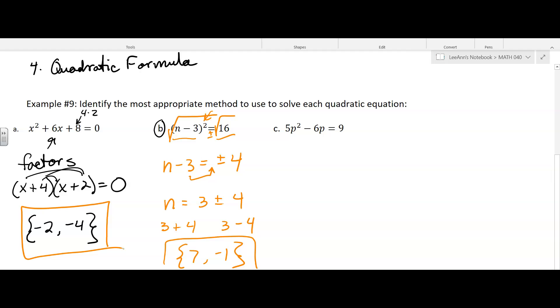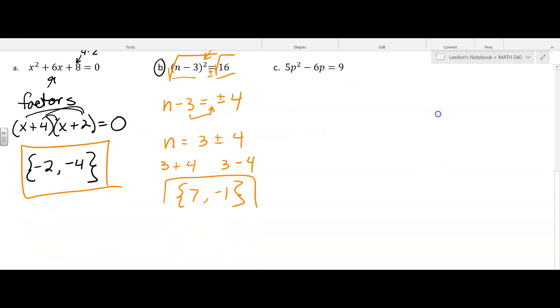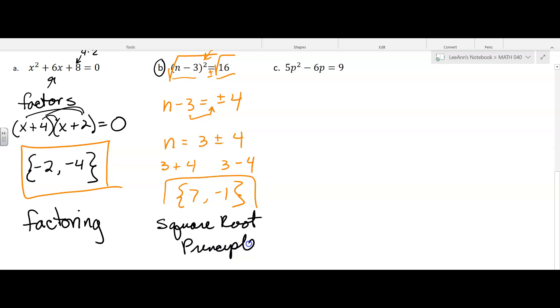All right, and then we've got one more. By the way, they didn't ask us to solve these. They just said what's the most appropriate method, which I didn't answer. So the appropriate method for the first one was factoring. The second one was square root principle. I think that's what they call it. And then the last one,